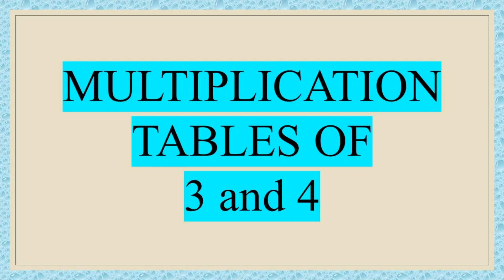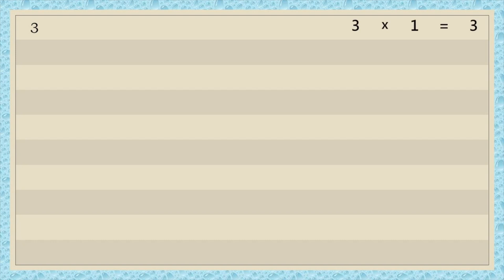The process of adding the same number several times is called multiplication. You can construct a table for any number using this method. For example, three written only once — three into one is equal to three. Three plus three written twice — three into two is equal to six. Three plus three plus three, written three times — three into three is equal to nine.